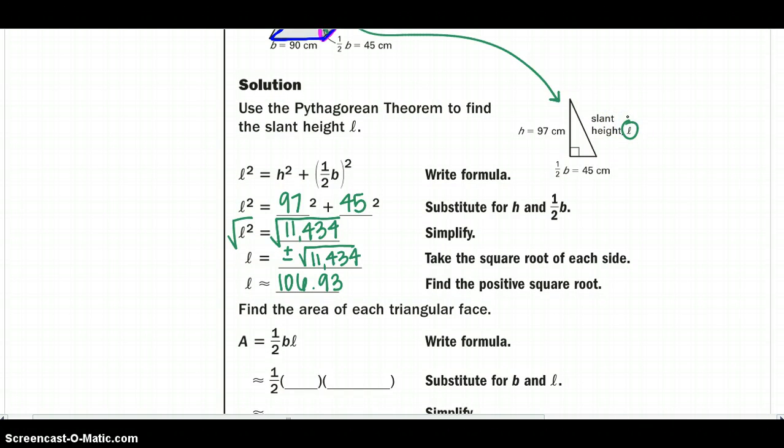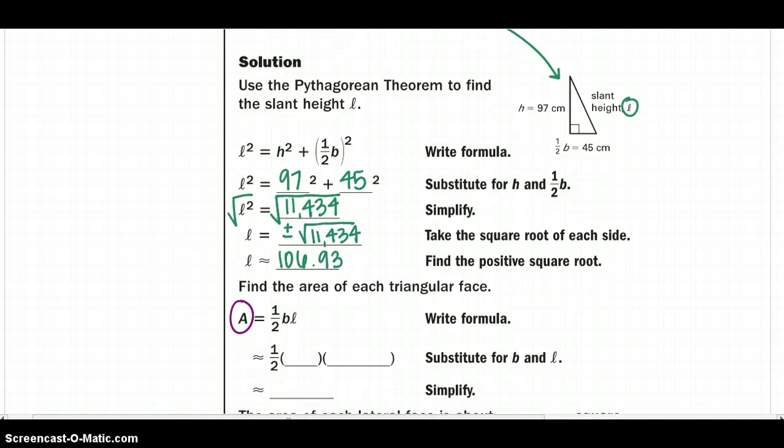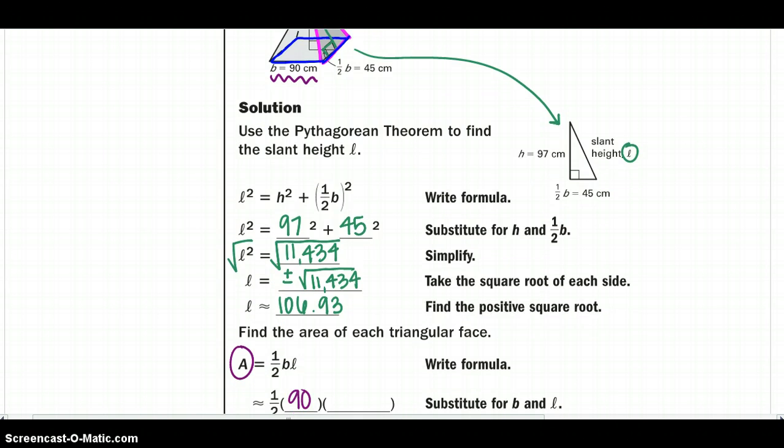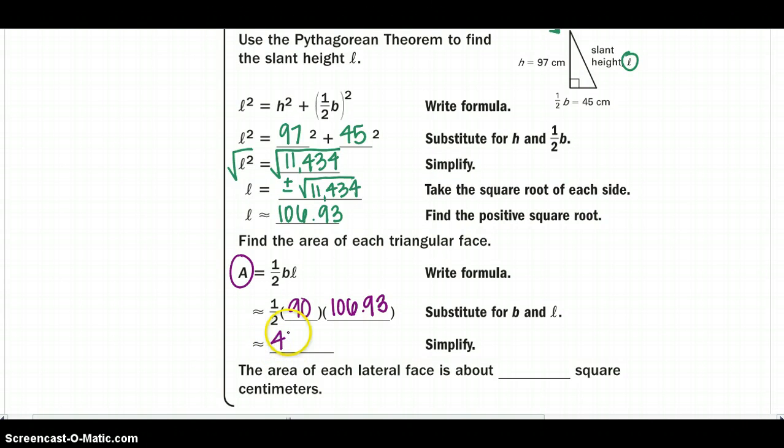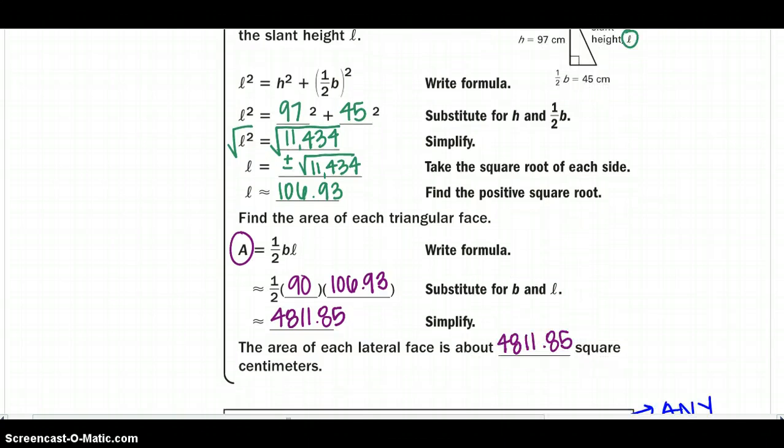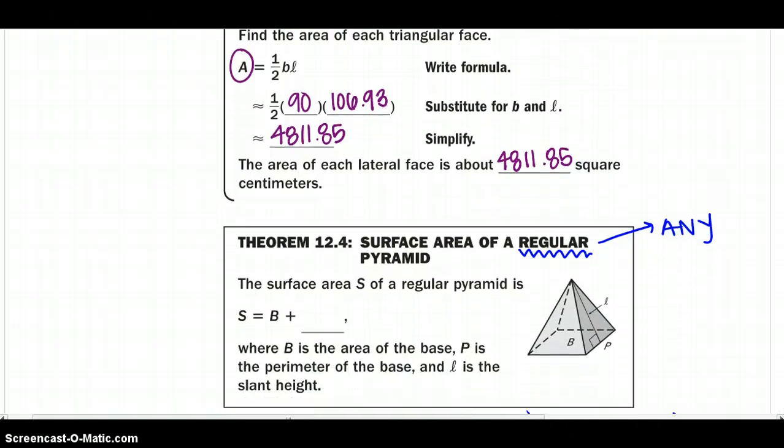I have to start out with that, and then since it's a triangle, I'm going to use my triangle formula: area equals one half base times our slanted height. So I would say one half times our base, which would be 90 up top, if you look at your base is 90, and we just found our slant height, which was 106.93, and we can say it is approximately 4,811.85. And again, we're still looking at area, so we have to keep it in square centimeters.